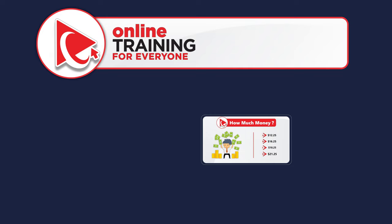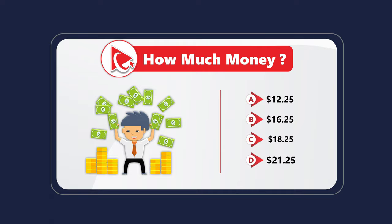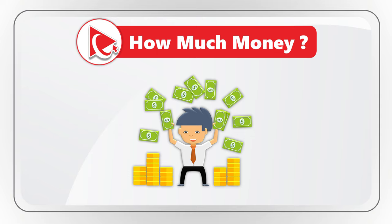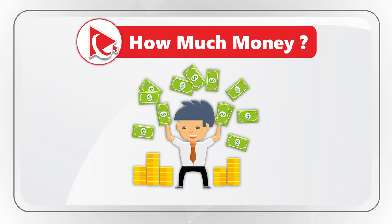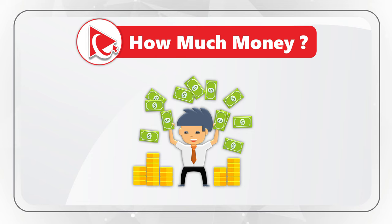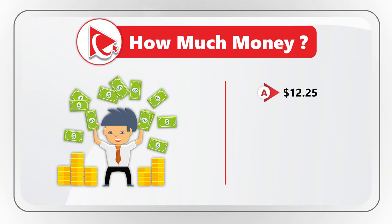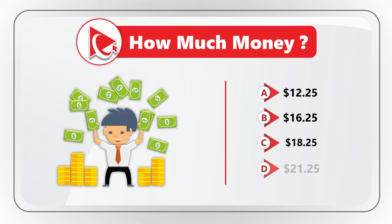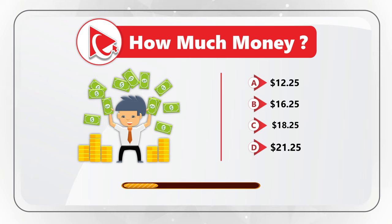Here's an amazing question to test your math skills. You need to determine how much money does Clark have. If you take a close look at the picture, you see that Clark is in possession of dollar bills as well as quarters. He is juggling dollar bills in the air and has quarters on the ground. Your answer will be one out of four choices: A $12.25, B $16.25, C $18.25, and D $21.25. Please pause this video if necessary, do your counting, and post your answer in comments. Thanks for participating and good luck!